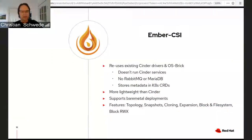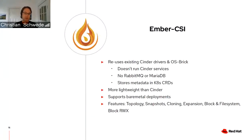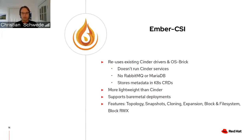Ember CSI also uses Cinder's code base to provide storage access to pods within Kubernetes and OpenShift clusters. Ember CSI reuses existing code in OS-Brick, but you don't need to run Cinder services, RabbitMQ, or MariaDB. All the metadata required is stored in Kubernetes custom resource definitions. This makes Ember CSI much more lightweight than Cinder itself and supports bare metal deployments. In comparison to Cinder CSI, which requires a running OpenStack deployment, Ember CSI can provide storage access for bare metal OpenShift and Kubernetes clusters without any additional OpenStack requirements.